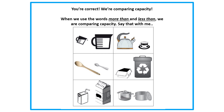Now I want you to say it to yourself. Great job. And now I want you to turn to your partner and tell your partner. Maybe we need a little bit more practice with that one — capacity can be a tricky word. So let's say it with me again. When we use the words 'more than' and 'less than,' we are comparing capacity. Say it with me. Get ready. When we use the words 'more than' and 'less than,' we are comparing capacity.